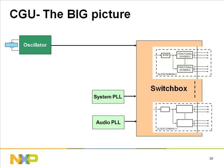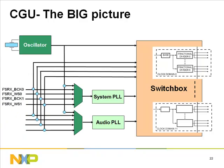A highly flexible switch box distributes signals from clock sources to module clocks. Four external signals arrive from the I2S interfaces, fed directly to the switch box and also acting as inputs for the two PLLs. Both the system PLL and audio PLL generate frequencies based on one of five input clocks from the oscillator and I2S pins — so in all, seven input clocks are generated to the internal switch box.